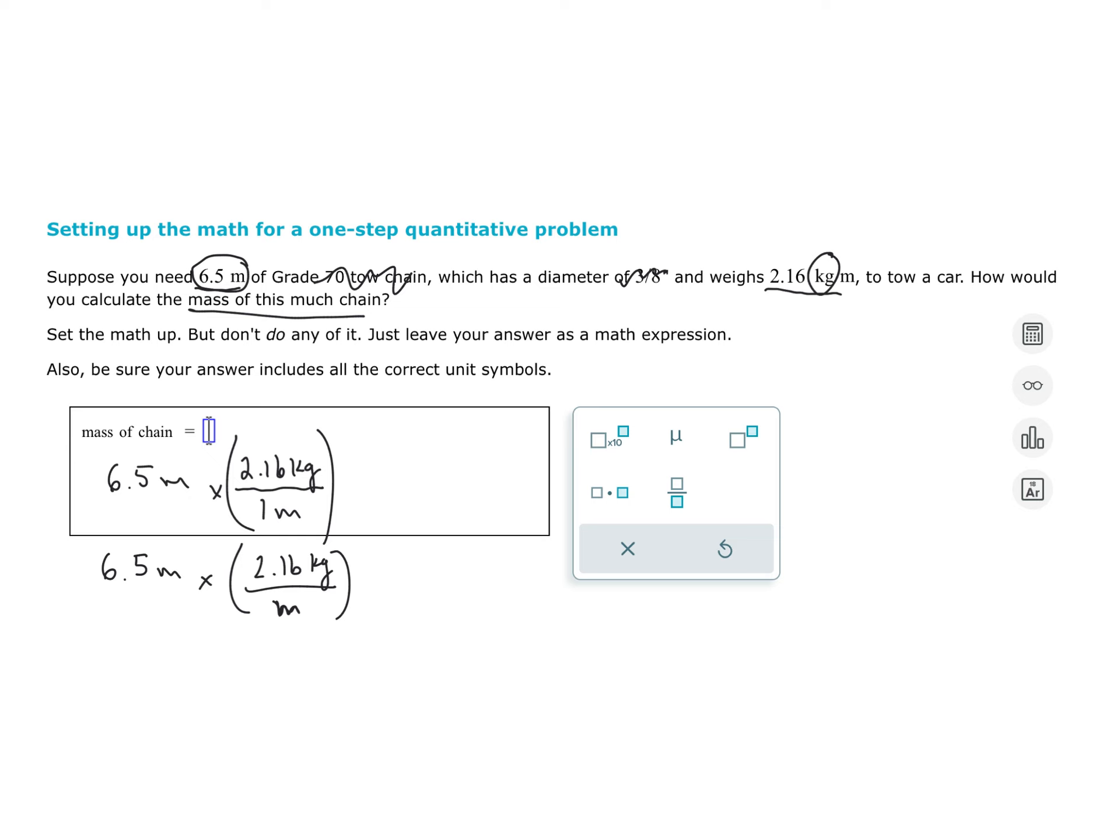A few other versions of this question. For example, someone had a question that said you had 532 grams of chain, and the chain was 44.5 grams per kilometer of wire, and it asked for the distance that you were looking for.